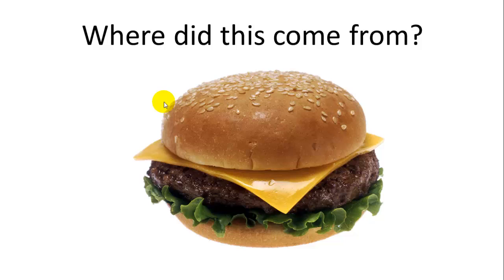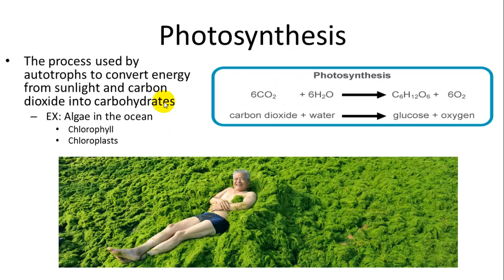Another question when looking at our food — where did it come from? If you want to go further back, all the different parts of the cheeseburger can be traced back to certain cellular functions. The first and most basic of which is photosynthesis — the process by which you take carbon dioxide out of the air, add water, use the energy from light to form carbohydrates (specifically glucose), with a byproduct of oxygen.